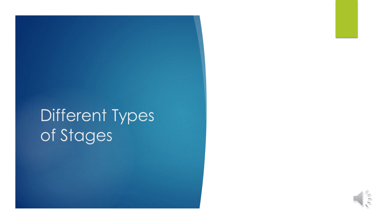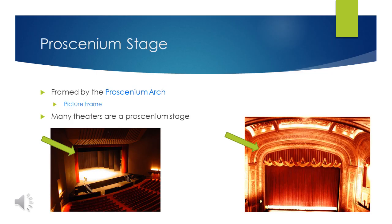Different Types of Stages. The first is a proscenium arch stage. It is called this because it is framed by the proscenium arch. It creates a picture frame effect. Many theaters are proscenium, including our own.